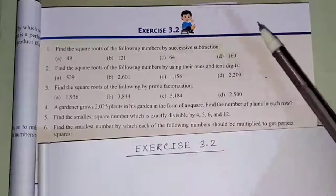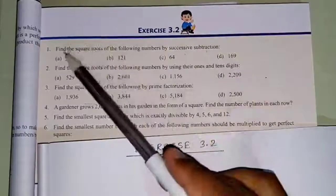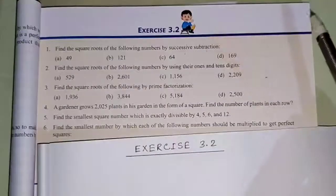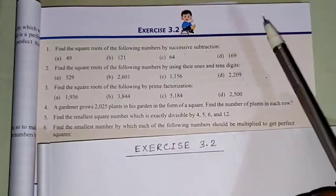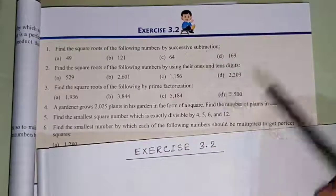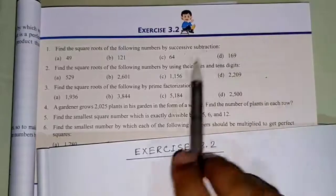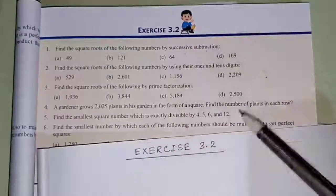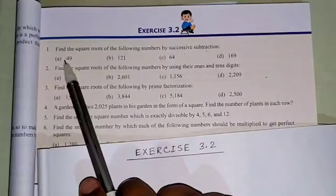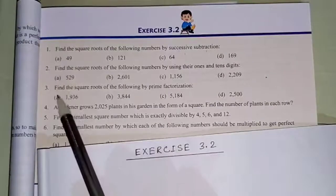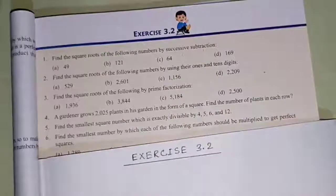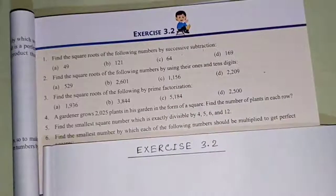So these numbers — question number 1, question number 2, question number 3 — you have to do on your own, because I have already explained how to do this kind of questions. If you don't remember the method, watch the videos again and do questions 1, 2 and 3 yourself. I am starting from question number 4.